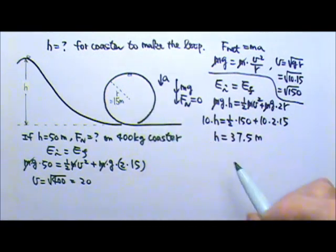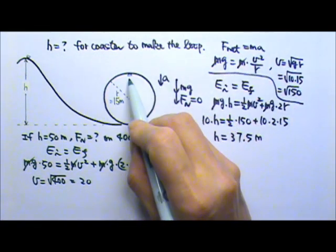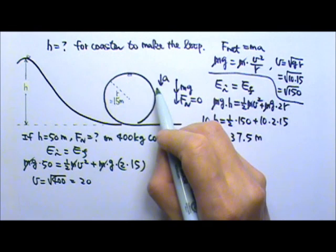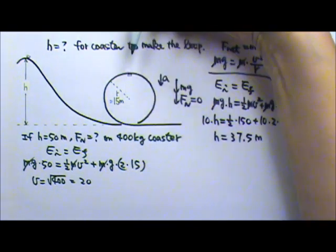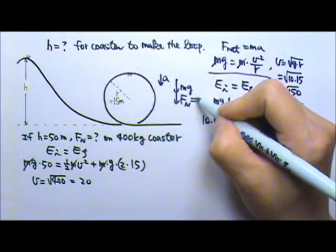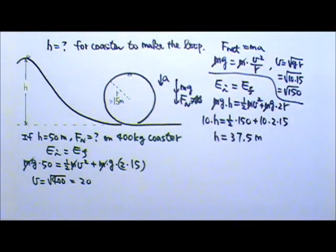Now we can use the forces. So the acceleration over there will still be downward. If you draw the force diagram it will be mg and the normal force from the track going downward. Just this time the normal force is not zero. And we're looking for that normal force.